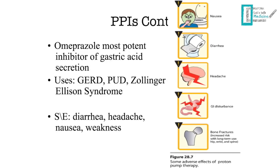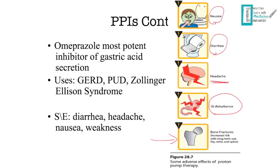PPIs are used for peptic ulcer disease and gastroesophageal reflux. Side effects include nausea, diarrhea, and headache. Large doses can cause encephalopathy and GI disturbances with cramps. Importantly, PPIs can cause bone fractures, especially of the hip, wrist, and spine — another important exam question.